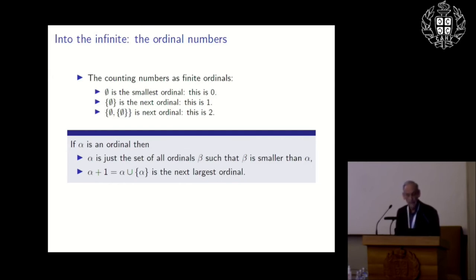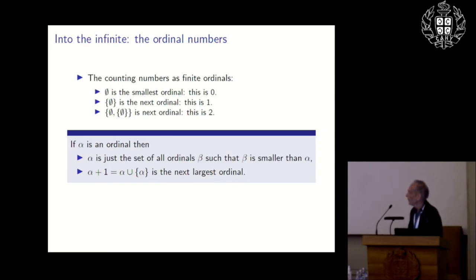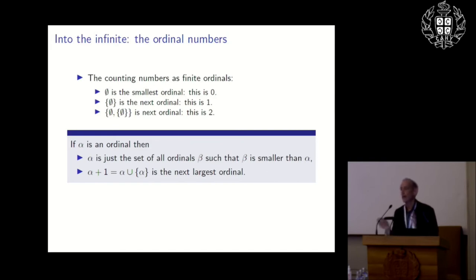In general, if alpha is an ordinal, it's just the set of all smaller ordinals. And how do you get the next biggest ordinal? If alpha is an ordinal, you form a new set where you add alpha itself as a new member — that's alpha plus one. That's how we think of the ordinals.